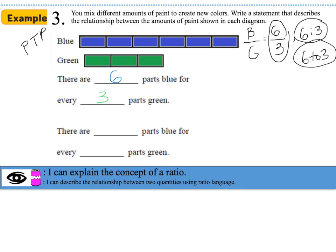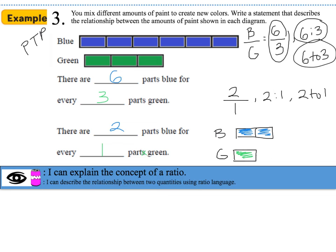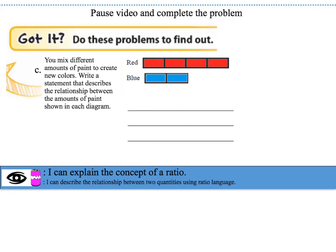This ratio is not reduced, so I reduce 6 over 3 by dividing by 3: 6 divided by 3 is 2, and 3 divided by 3 is 1. The reduced ratio is 2 over 1, or 2 colon 1, or 2 to 1. The statement is: there are 2 parts blue for every 1 part green. The tape diagram shows 2 blue boxes on top and 1 green box on the bottom. Pause the video and complete the practice problem.